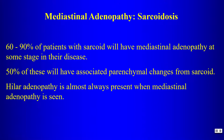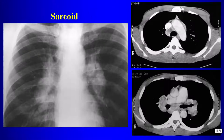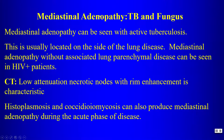Sarcoidosis can give mediastinal lymphadenopathy — often with parenchymal changes. Bilateral symmetric hilar lymphadenopathy is a hallmark. On CT: bilateral hilar nodes and right paratracheal nodes. Subcarinal lymphadenopathy is also typical. TB and fungal infections can also cause lymphadenopathy, characteristically with low-attenuation nodes and peripheral enhancement.